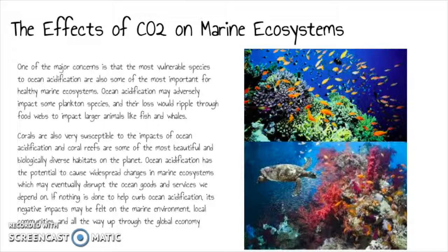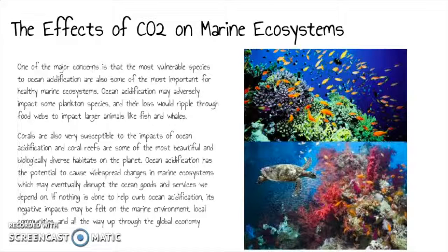A consequence of oceans becoming more acidic is the binding up of carbonate ions, which are used by marine creatures to make their calcium carbonate shells and skeletons. As the availability of carbonate ions decreases, it becomes more difficult for these animals to build their calcium carbonate structures — imagine someone trying to build a house while someone else keeps stealing all their bricks. As oceans become more acidic, it will progressively become more difficult, if not impossible, to build calcium carbonate shells and skeletons. By the middle to end of this century, parts of the oceans will be corrosive enough that they will cause already formed calcium carbonate to dissolve.